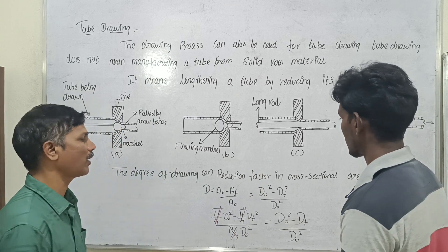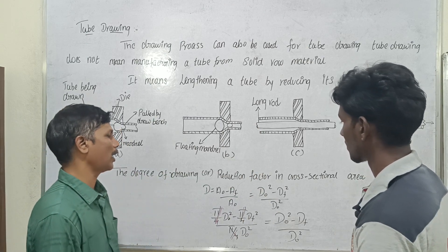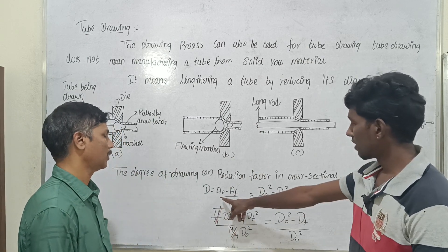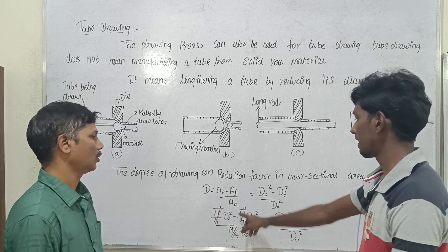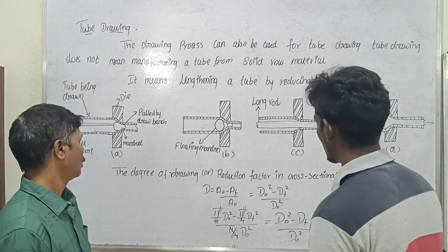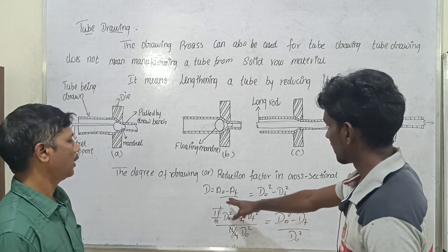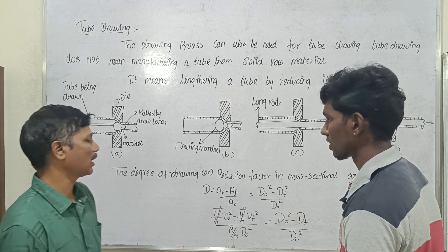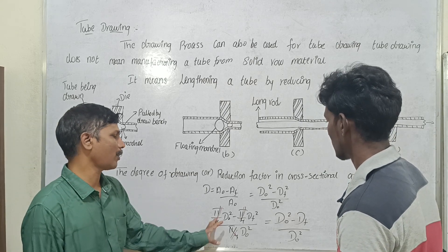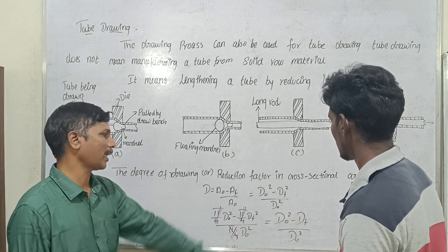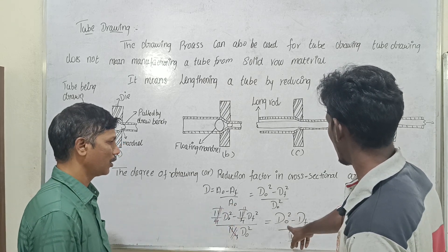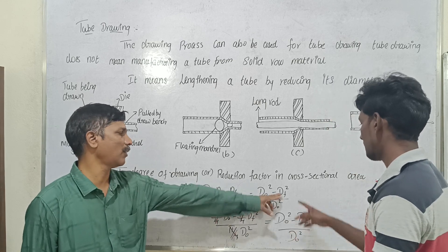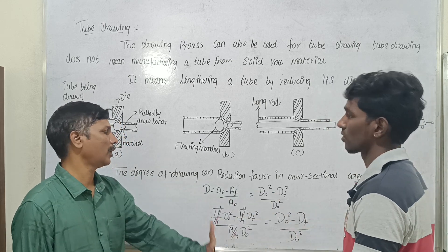Degree of drawing or reduction factor in cross-section area: Degree of drawing = (A_initial − A_f) divided by A_initial. That is the reduction factor. For area, we substitute diameter: (d₀² − d_f²) / d₀².